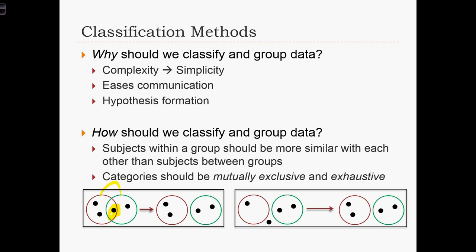Exhaustive refers to the fact that all data elements must be in a group. On the right-hand side, we see that this data element doesn't exist in either the red group or the green group — it's a standalone. To correct this, we need to make sure that all data elements 1, 2, 3, and 4 all have a group.